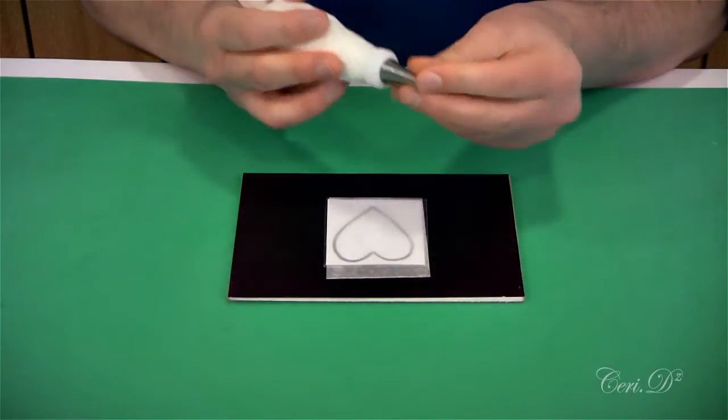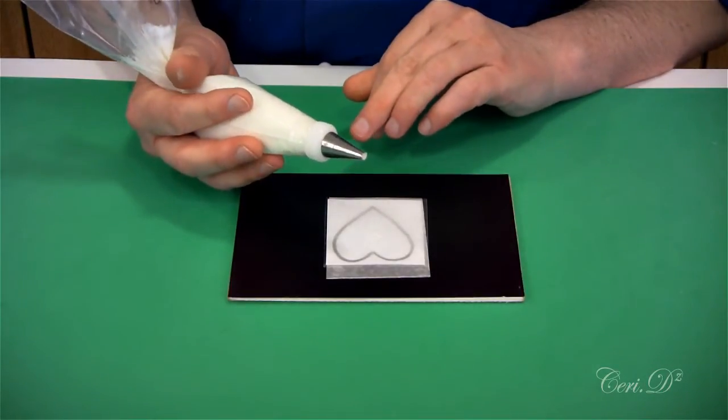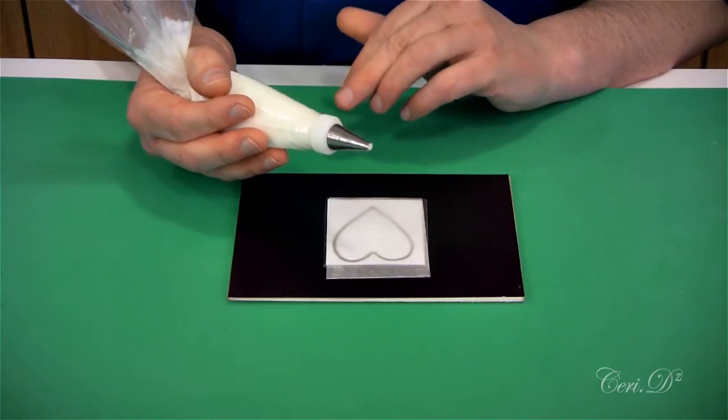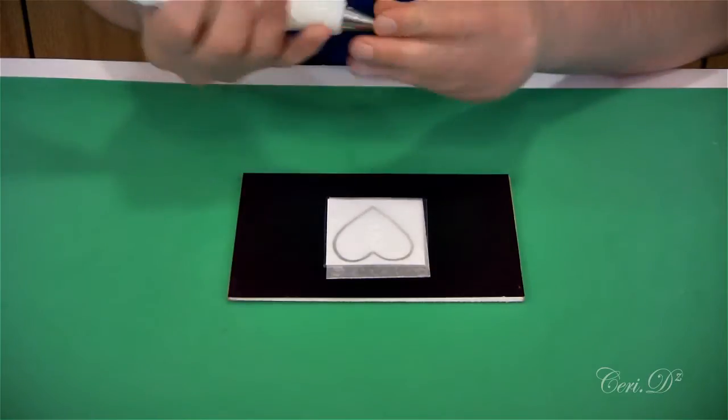Now in here I've got royal icing. This is a number 44, a PME nozzle, although I believe the nearest equivalent is a 362 in Wilton. It's a small star nozzle.